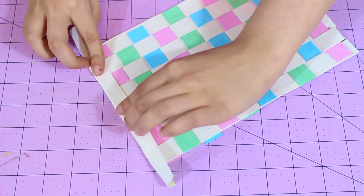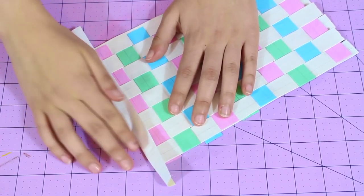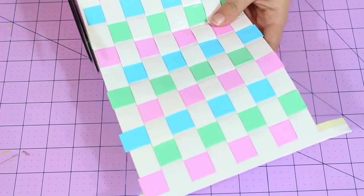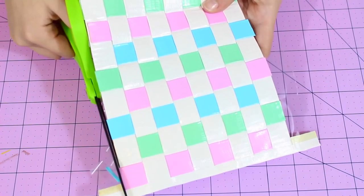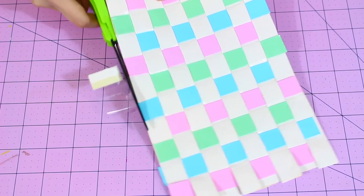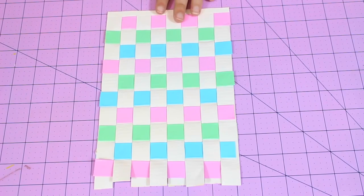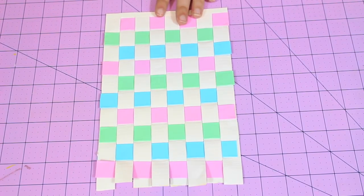And then just fold that over. And then I'm just going to trim the excess tape that I have. So now you should have something like this, and this will be the bottom of your Easter basket.